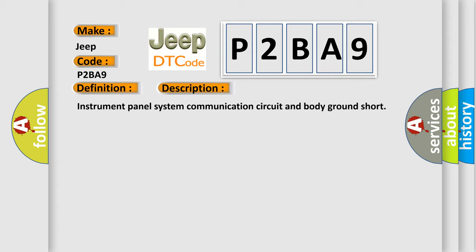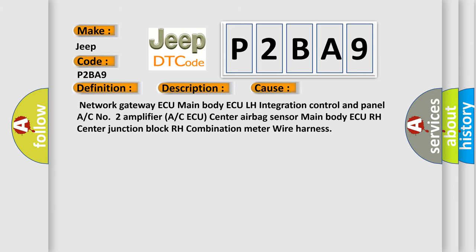This diagnostic error occurs most often in these cases: Network gateway AQ main body AQ LH integration control and panel R or C number 2 amplifier R or C AQ center airbag sensor main body AQ RH center junction block RH combination meter wire harness.